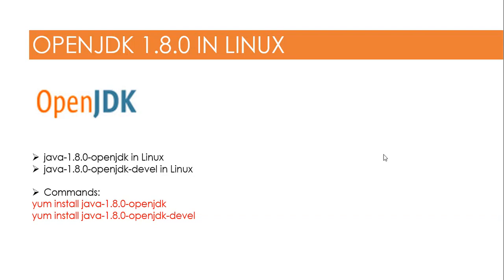Hello and welcome. In this lecture we are going to talk about how to install OpenJDK 1.8.0 in Linux or RHEL 7 operating system. We need to perform the commands: yum install java-1.8.0-openjdk and yum install java-1.8.0-openjdk-devel.